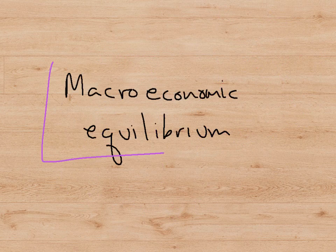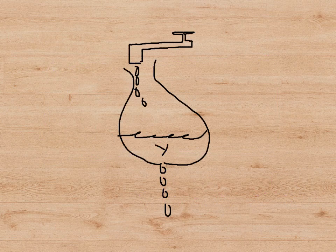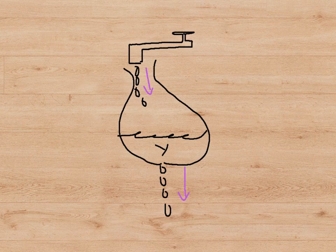This leads us to the concept of macroeconomic equilibrium. An equilibrium is a steady state — a situation where nobody has any reason to change their behavior. Imagine we are in a state of equilibrium where the speed at which water is flowing into our economy, which is the injections, is equal to the speed at which it is leaking out. So the level of water, or national income, in our economy is steady.